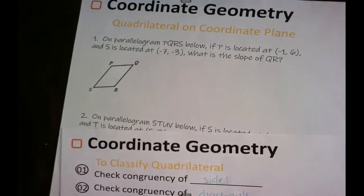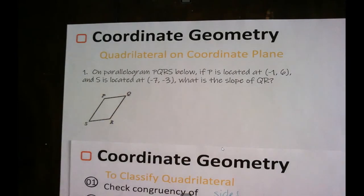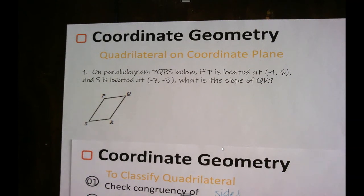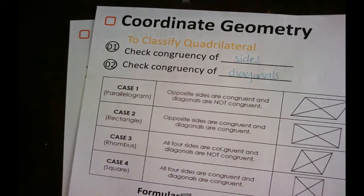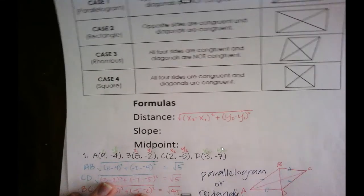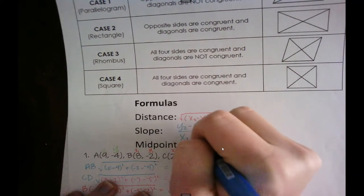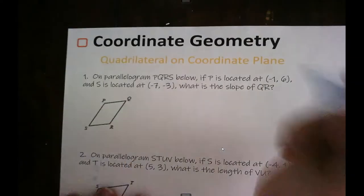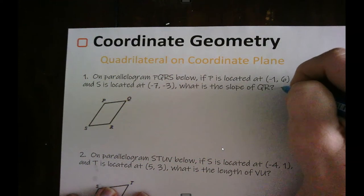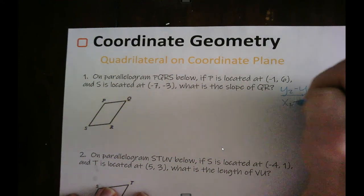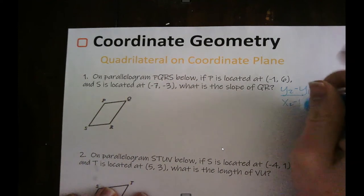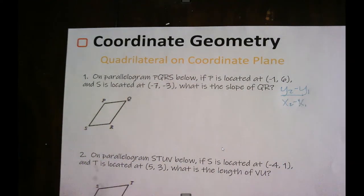You might also be given some points for a quadrilateral and asked for the slope of one of the sides. Remember our slope formula: y₂ minus y₁ over x₂ minus x₁.